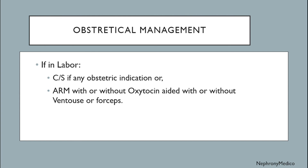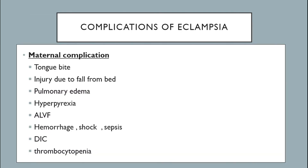If any obstetric indication exists, perform cesarean section. If already in labor, use ARM with or without oxytocin, aided with or without ventouse or forceps. Maternal complications include tongue bite, injury due to fall from bed, pulmonary edema, hyperpyrexia, acute left ventricular failure, hemorrhage, shock, sepsis, and DIC.